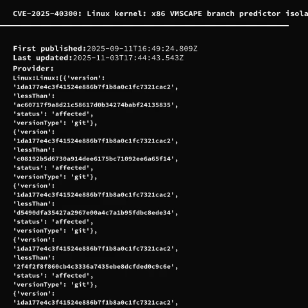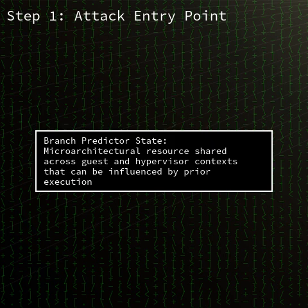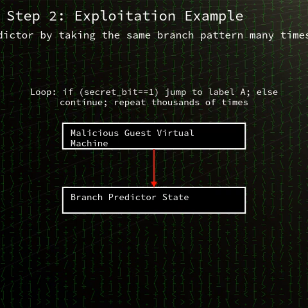CVE-2025-4300 addresses a flaw in the x86 virtualization code of the Linux kernel where branch predictor state is not fully isolated between a guest virtual machine and its user space hypervisor process. An attacker running a malicious guest can deliberately train the shared branch predictor during guest execution.